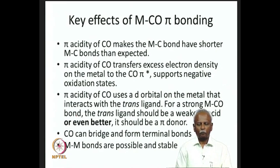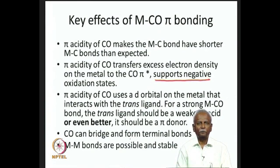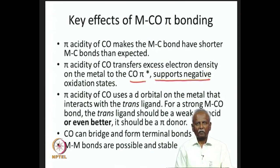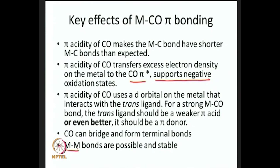The key factor stabilizing the metal carbonyl bond is the pi acidity of carbon monoxide. The pi acidity, or the accepting ability from the pi-star orbital of carbon monoxide, leads to stabilization of negative oxidation states. Metals in negative oxidation states can be supported because electron density can be pumped into the antibonding orbitals of carbon monoxide. This results in a very strong bond between carbon monoxide and the metal. Carbon monoxide can also form bridges between two metal atoms, and even without bridging, metals can form metal-metal bonds, as seen in Mn2(CO)10 and Co2(CO)8.